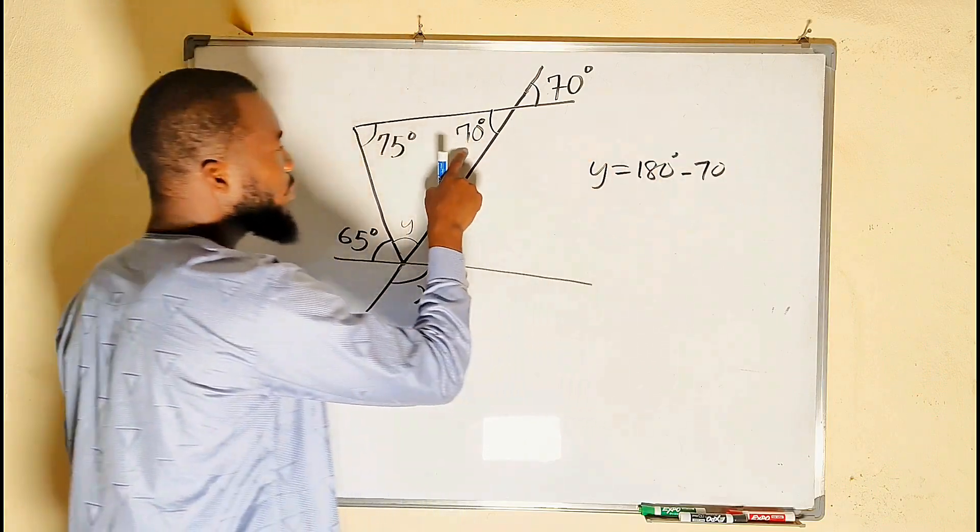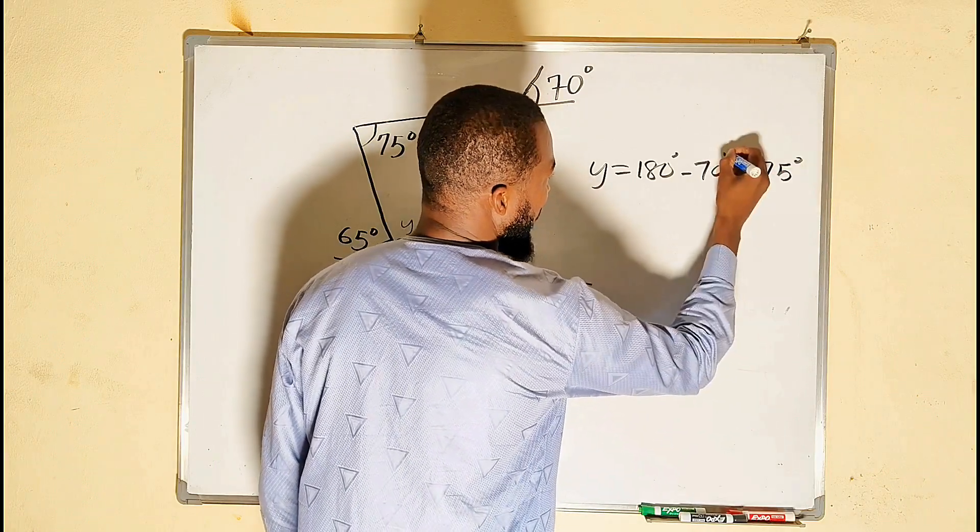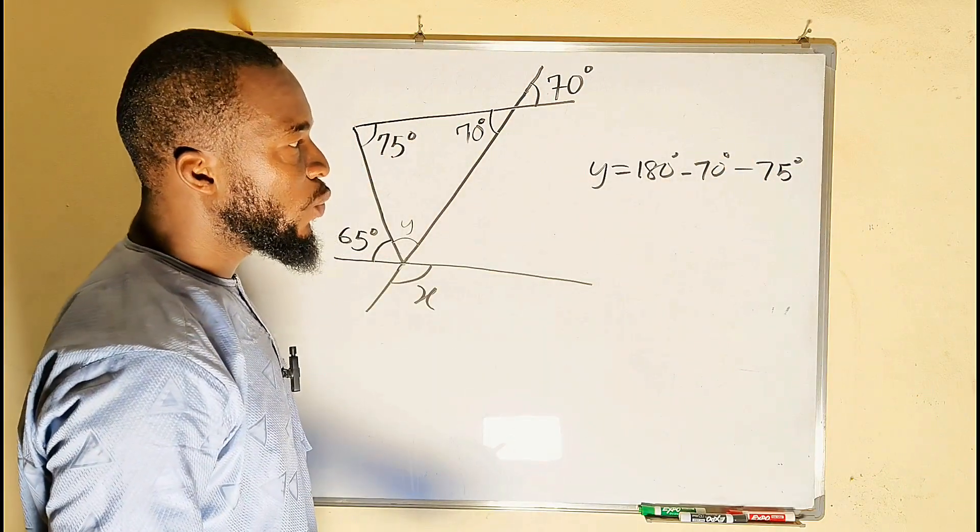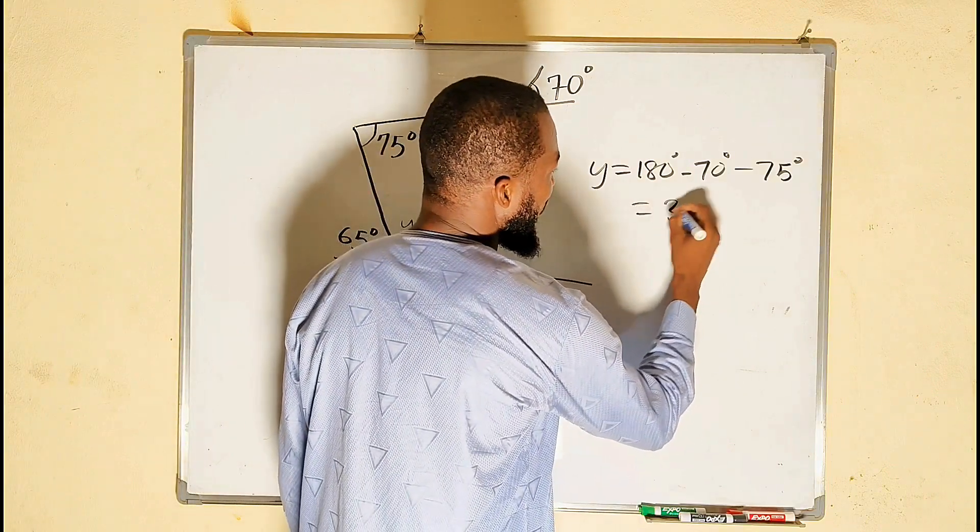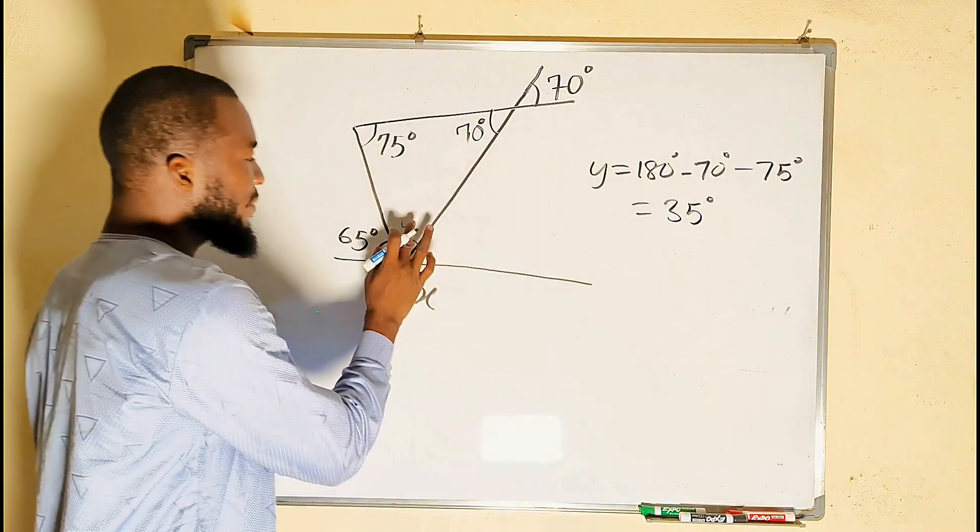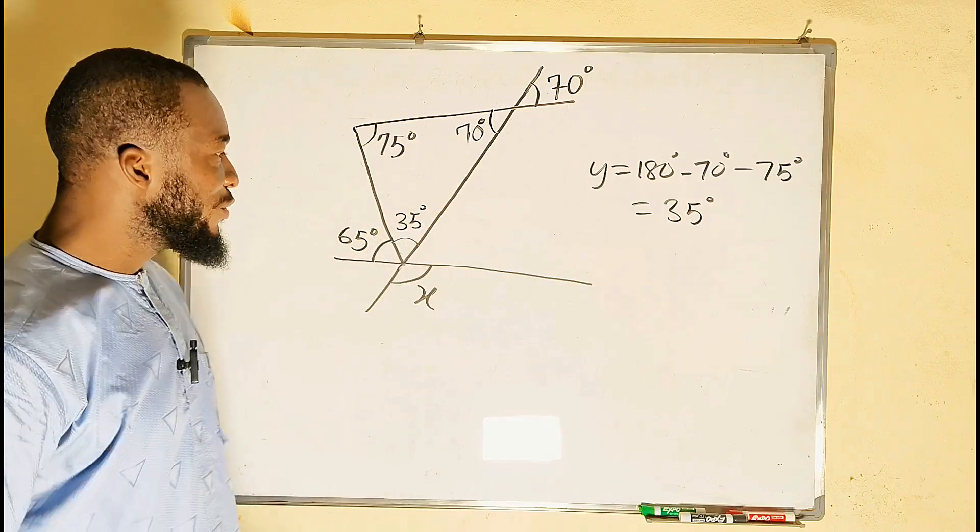70 degrees, which is this one, then minus the other one, 75 degrees. 180 minus 70 is 110, and 110 minus 75 will give us 35 degrees. So this particular angle right here is 35 degrees. Remember I told you that opposite angles are the same.